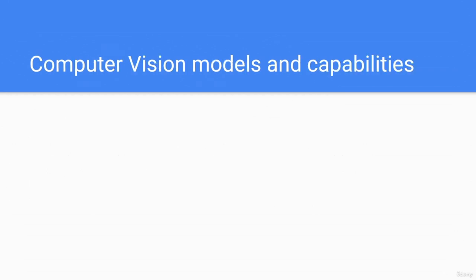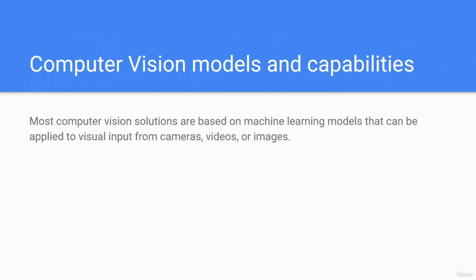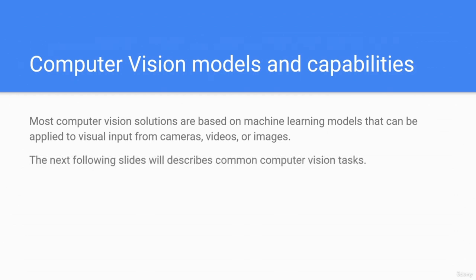Computer vision models and capabilities. Most computer vision solutions are based on machine learning models that can be applied to visual input from cameras, videos, or images. The following slides describe common computer vision tasks.